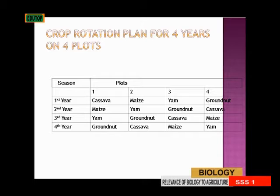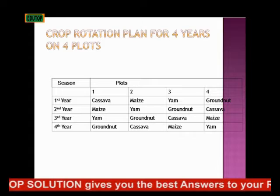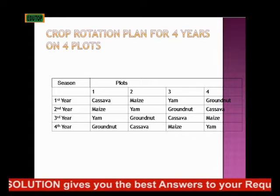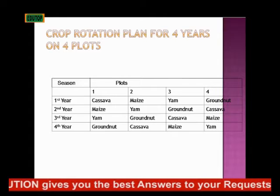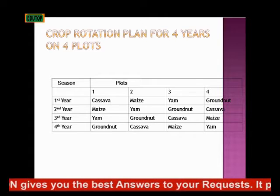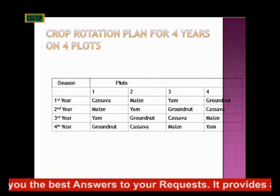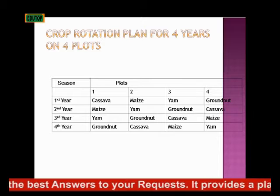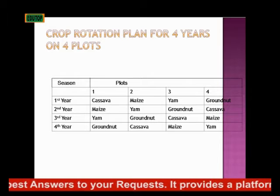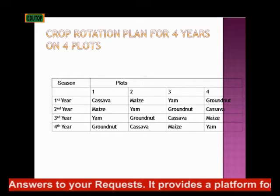In the third year, you plant your yam in the first plot, then groundnut on the second plot, cassava in the third plot, then maize in the fourth plot. Then for the fourth year, groundnut is planted in the first plot, cassava in the second plot, maize in the third, then yam in the fourth.